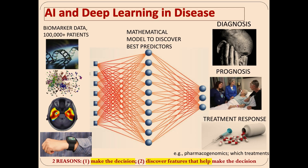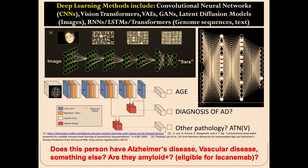Here's a standard setup of one branch of AI, often known as discriminative AI. You have inputs on the left — neuroimaging, genetics, clinical data, maybe real-time data from an actigraphy watch — and you'd like to learn from this data how to make a decision: the person's diagnosis, prognosis, or treatment response. There might be a binary outcome or prediction on the right. As a neuroscientist, you also want to discover features in the data that are helpful for making that decision.